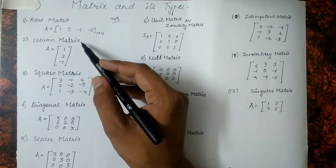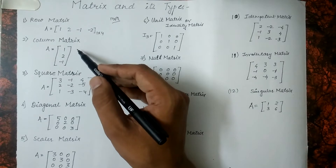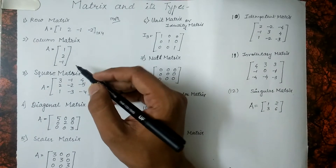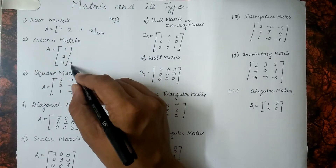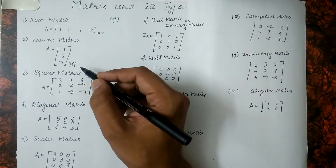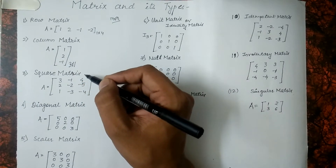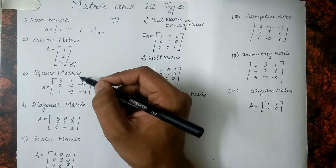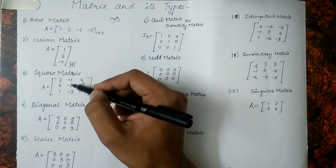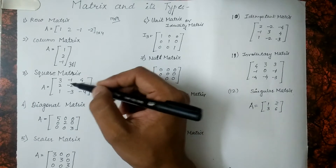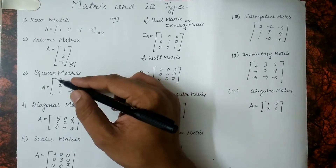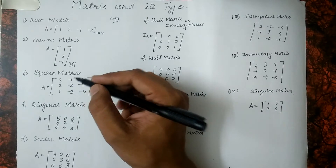Another matrix which we have is a column matrix. The column matrix comprises of elements in a column, so the order of this matrix would be 3 into 1. The next matrix which we have is the square matrix. A square matrix is a matrix which has equal number of rows and columns. These elements of a matrix along the diagonal are called the diagonal elements, and this diagonal is called the leading diagonal of a square matrix.